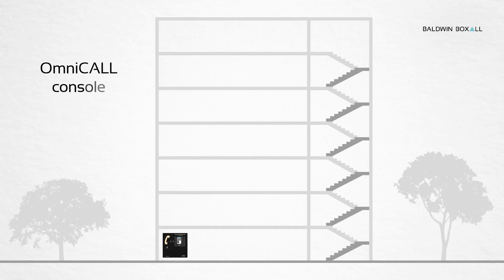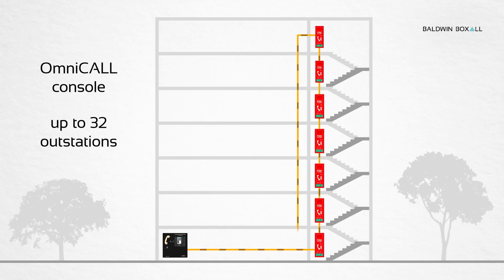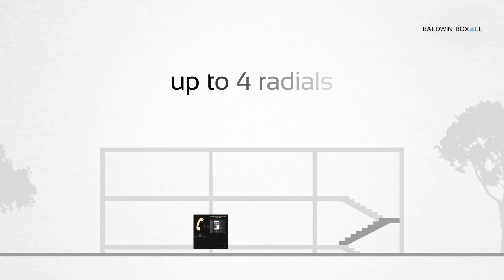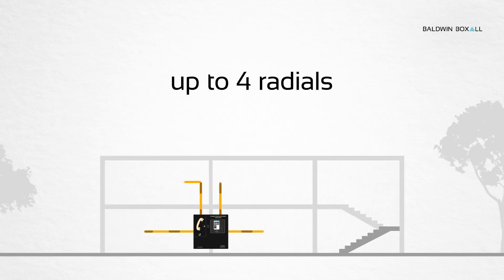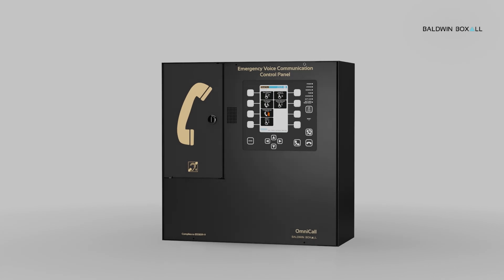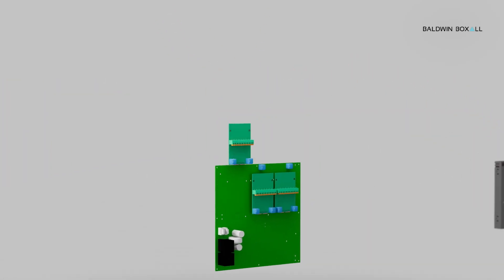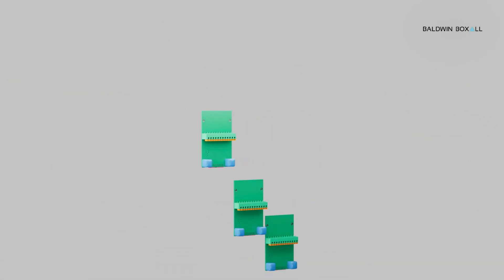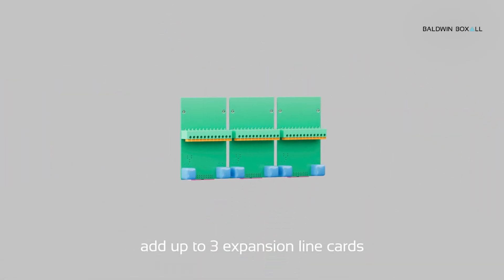The OmniCall console supports 32 outstations on a loop or up to four radials using two core cables for loops or radials. Add up to three expansion line cards for 16 radials or four loops in any combination.